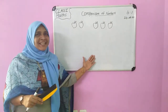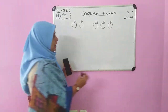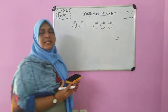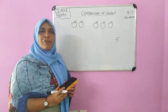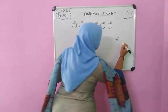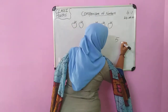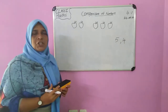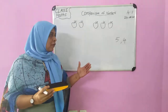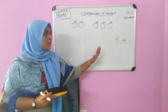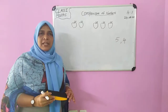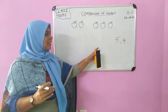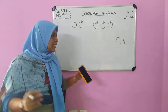Shall I write some numbers here, children? Which number is this? Shifa — five. Which number is this? Hisham — four. Which number is the greater number here, Hisham? Five is the greater number.